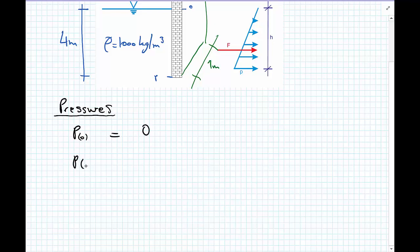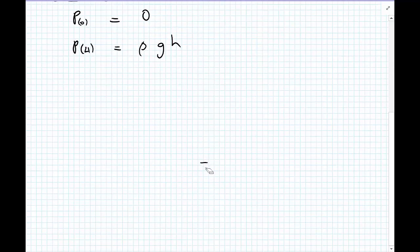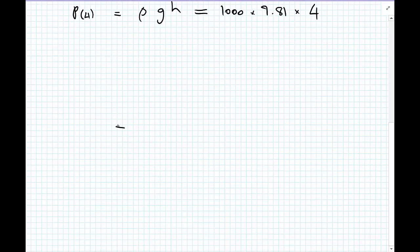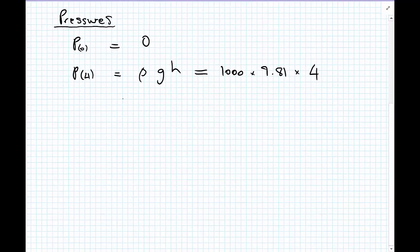And the pressure at 4 meters is equal to rho g h, which is then equal to 1,000 times 9.81 times the depth of the water, which is 4 meters. And performing the calculation, we get that P from 4 meters of height of water is 39,240 newtons per meter squared.